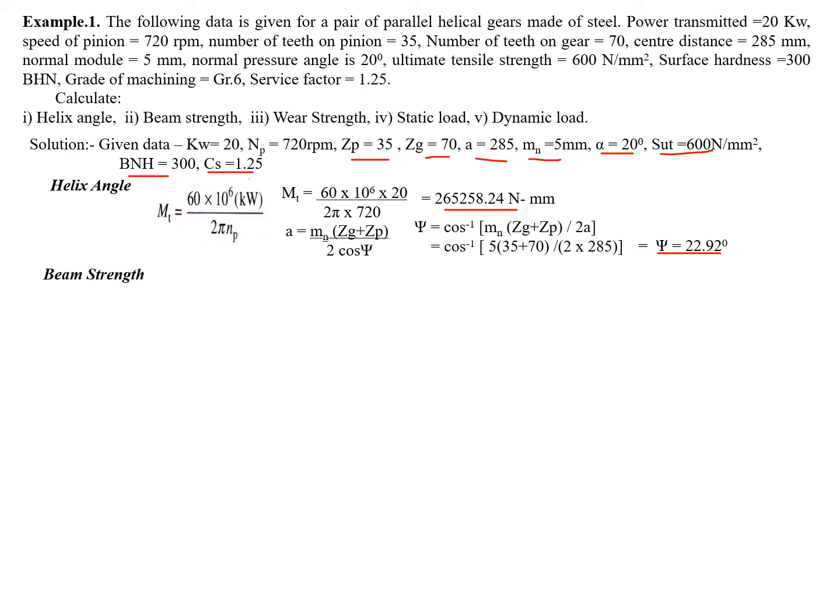Now the beam strength. For that, virtual number of teeth for helical gear - we have already seen the virtual number of teeth is Zp upon cos cubed of psi. We need to find out the value of y, that is the Lewis factor. For that we use this interpolation method. With the help of interpolation between values at 40 (0.389) and 45 (0.399), we find the value at 44.79 is 0.3985.